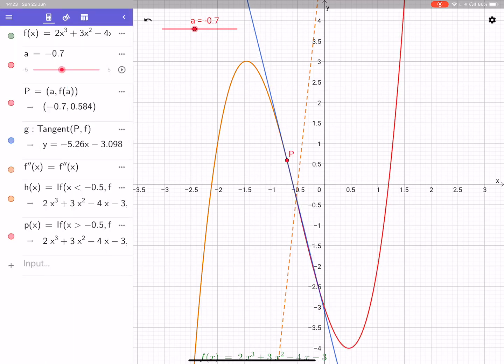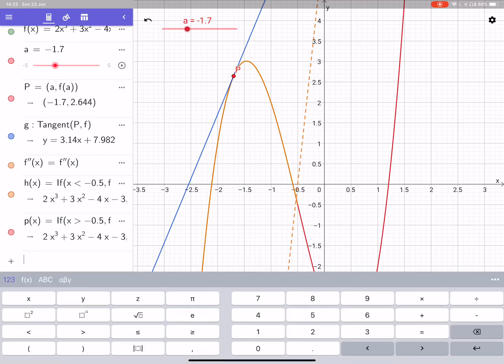Okay, so where the graph is red, the curve is concave upwards. The tangent is below the curve. And where the curve is orange, the curve is concave downwards.